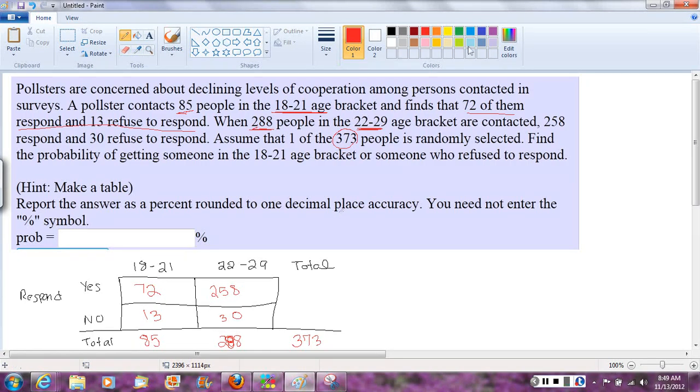And now let's see what's the question they're asking here. They want to know, if we choose one of these people in this table at random, what's the probability of getting someone in the 18 to 21 age bracket or someone who refused to respond? So if we write that out in terms of probability, we want the probability of getting someone in the 18 to 21, or they said no, they refused to respond.